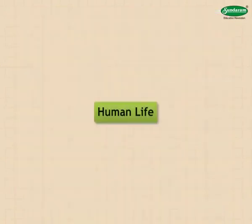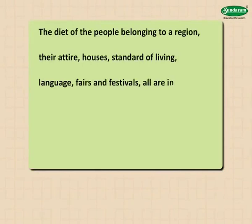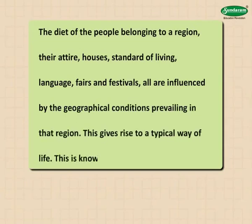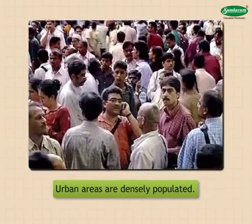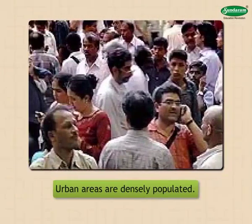Human life: the diet of the people belonging to a region, their attire, houses, standard of living, language, fairs, and festivals — all are influenced by the geographical conditions prevailing in that region. This gives rise to a typical way of life, known as human life in that region. There is a considerable difference in the human life in urban and rural areas. Urban areas are densely populated and provide job opportunities on a large scale.